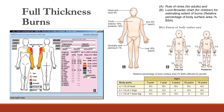According to Lund and Browder, a chart is provided for children where the age of the victim is an additional factor incorporated. The percentages differ from adults. A computerized technique also exists where the computer calculates burn injury by scanning — yellow color represents partial burns, red color represents deep burns, and dark blue represents amputation or defragmentation of the skin.